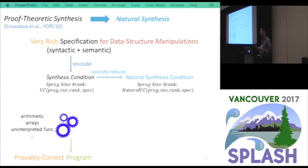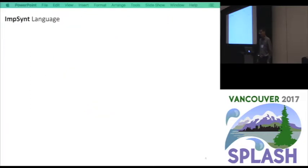The idea is that the synthesis condition cannot be solved, so we reduce it soundly to something called natural synthesis condition. This is a different logical formula, but it can be solved using the known theories and the existing solvers. If there's a solution, then we know the solution is correct. Otherwise, there's no solution, so that means we have to give up. There's no simple program that can be verified using the natural proof technique. So it's not a Turing-complete approach, but it's sound. We implemented the idea in a language called imp-synth.